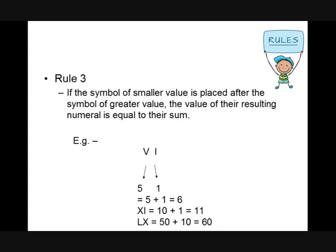Rule three: if the symbol of smaller value is placed after the symbol of greater value, the value of the resulting numeral is equal to their sum. For finding the value of the given symbol, we first find the value of each symbol then add their values. The value of V is five and the value of I is one, so after adding we get six. Similarly, ten plus one equals eleven, and fifty plus ten equals sixty.